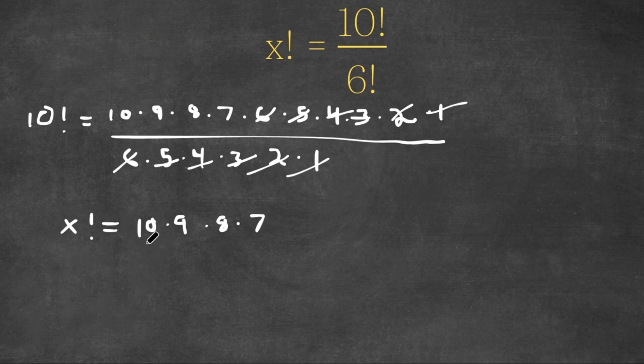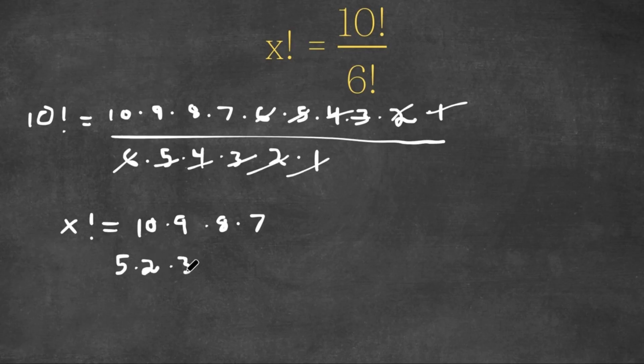Now 10, this is equal to 5 times 2. 9 is equal to 3 times 3. 8 is equal to 4 times 2. And 7 is just 7—we can't simplify that anymore.